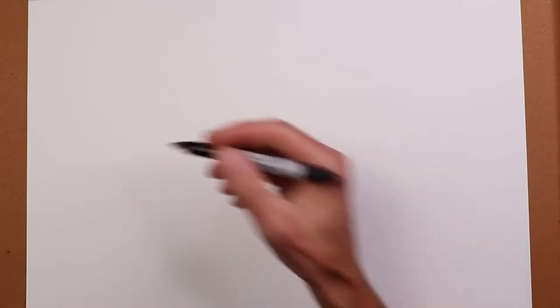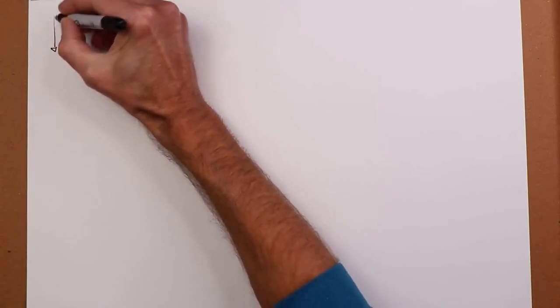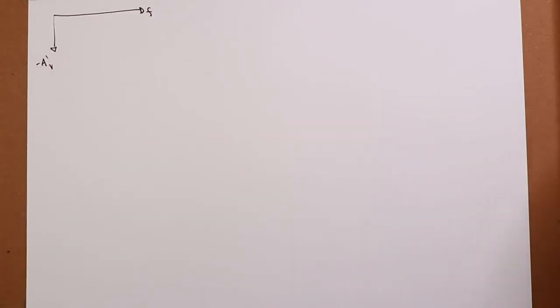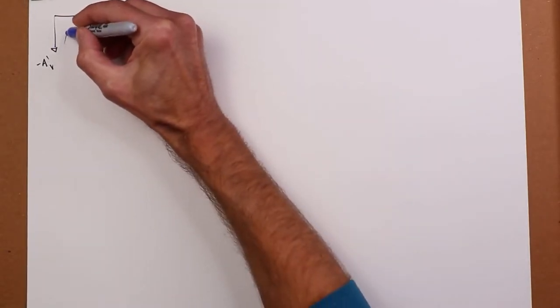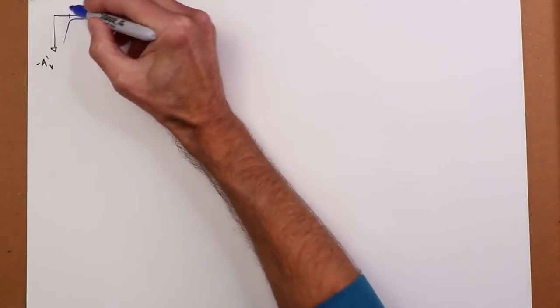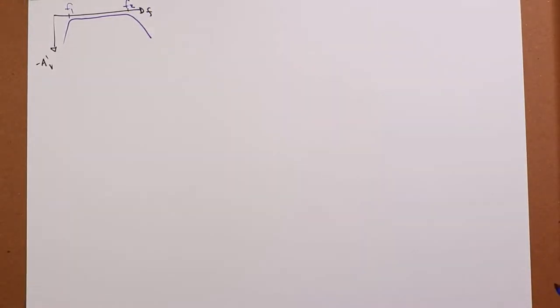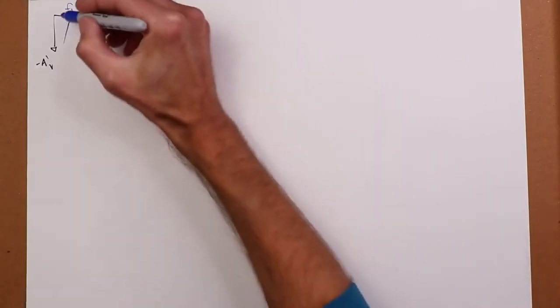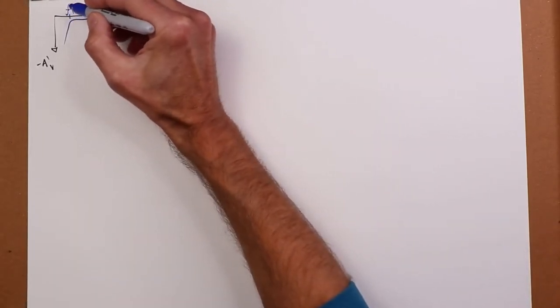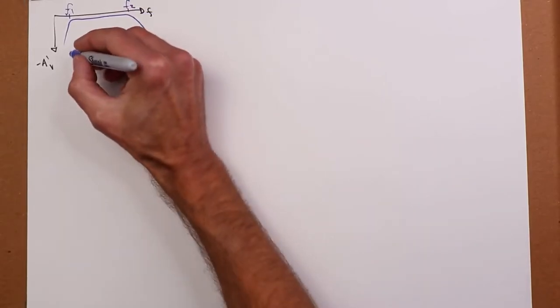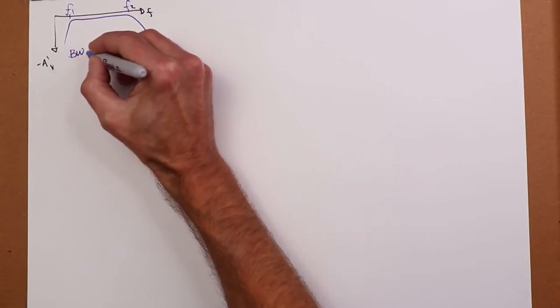Well, there's basically two different kinds of bandpass filters you can look at. Broadly speaking, we talk about wideband filters and narrowband filters. So you might have something where, if you were to plot the frequency response, you end up with something maybe like this. So you have a lower frequency f1 and a higher frequency f2. And they're pretty far apart. So the difference we call the bandwidth. Bandwidth is f2 minus f1.